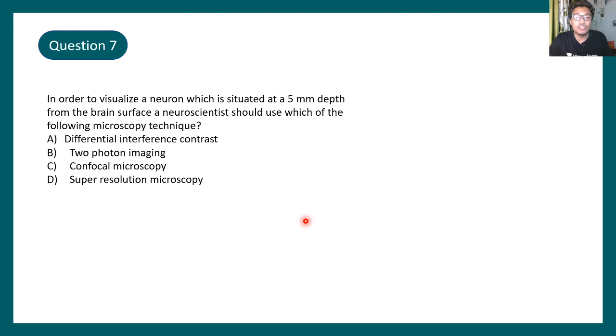The last question is: in order to visualize a neuron which is situated five millimeter depth from the brain surface, a neuroscientist should use which of the following microscopy techniques. So here a scenario is provided and you have to use a following technique, right. Again the question says differential interference contrast microscopy, two photon microscopy, confocal microscopy, or super resolution microscopy, which can possibly be used in this case, which is best option here? Answer is two photon imaging. Two photon microscopy use two pulses of light and this light is basically infrared range, so greater the wavelength, lesser would be the scatter and it can image deeper specimen.